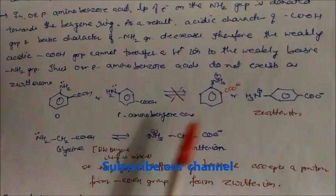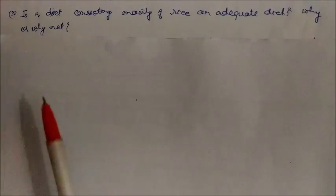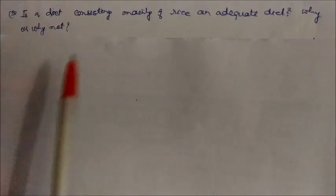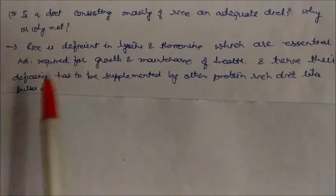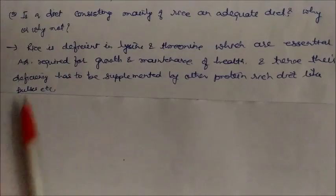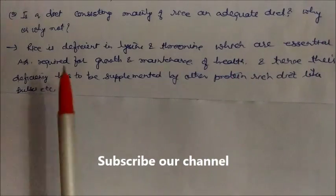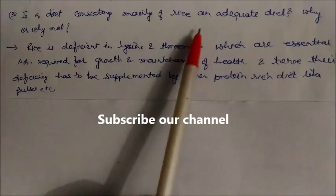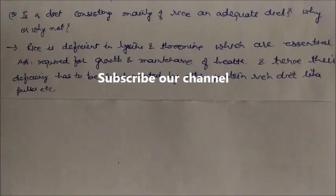Is a diet consisting mainly of rice an adequate diet? The answer is no, because rice is deficient in two essential amino acids — lysine and threonine — which are required for growth and maintenance of health. Hence, their deficiency must be supplemented by other protein-rich foods such as pulses. That's why a rice-only diet is not adequate.